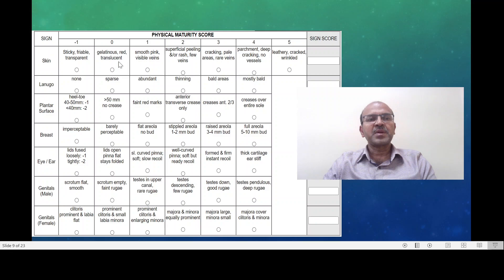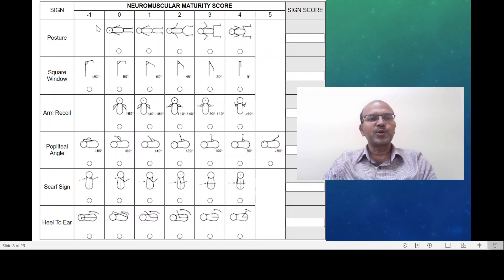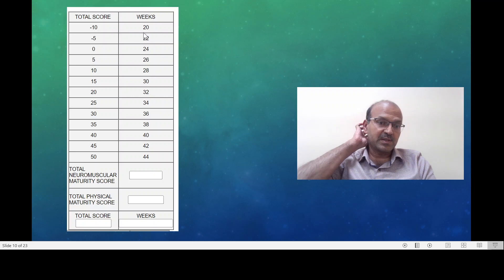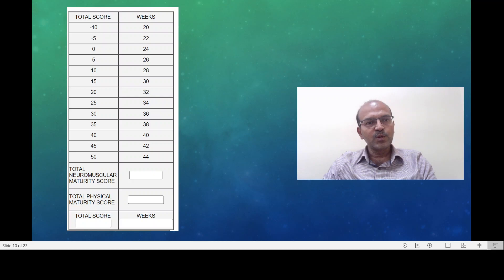You have scores from minus 1, sometimes some scores are up to minus 2, and then it goes 0, 1, 2, 3, 4 and 5 is only 1 in the skin parameter. You score these individually and then you combine the score. The same with the neuromuscular, so you have minus 1 in 4 of these, there is no minus 2 in the neuromuscular, and then you have 0 to 4 and there is 5 only for the popliteal angle. The combined score is assessed here and then you have the score which indicates the approximate gestation.